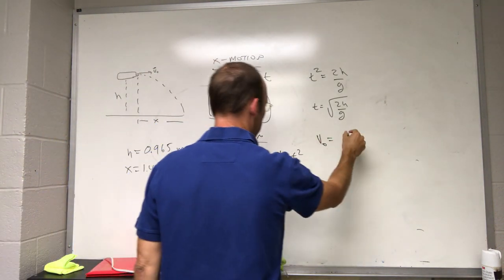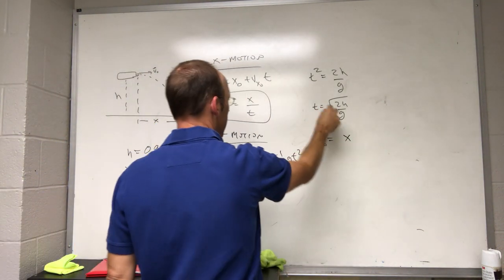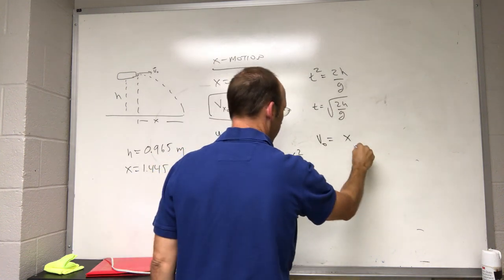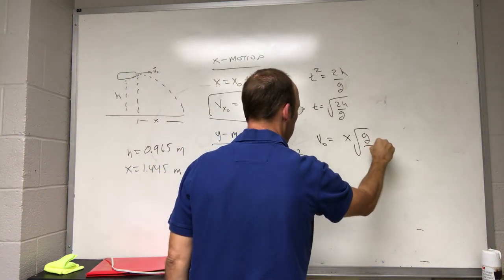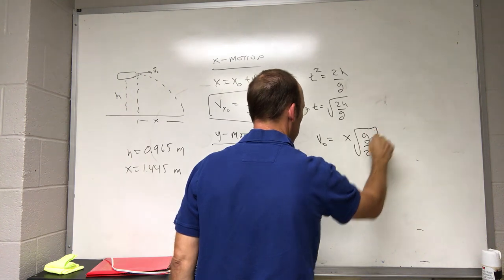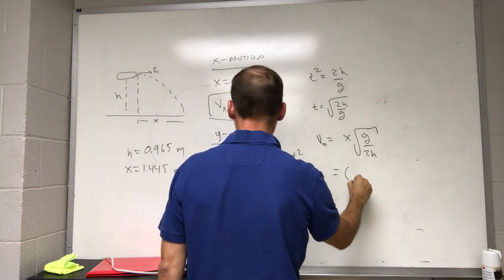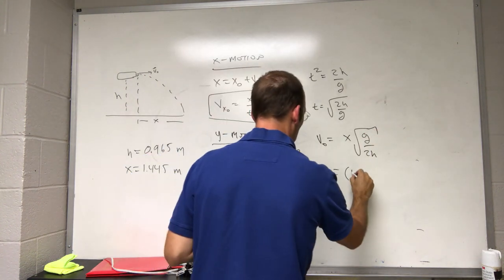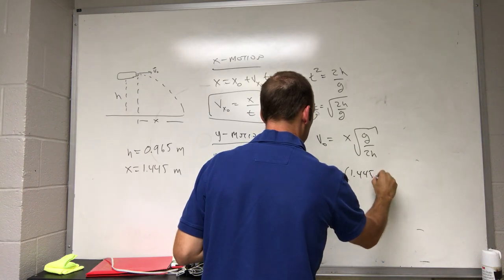v0 is going to be x, which I don't know, divided by t, which is 1 over this. So, I get the square root of g over 2h. So, now if I put my numbers in, I have x is 1.445 meters.